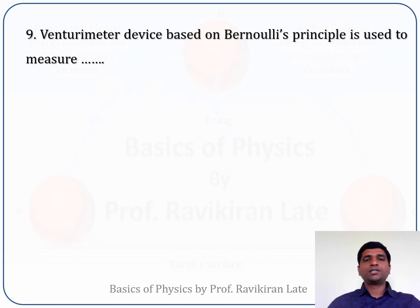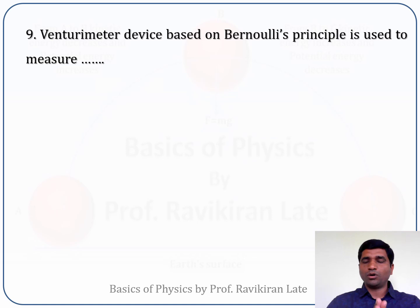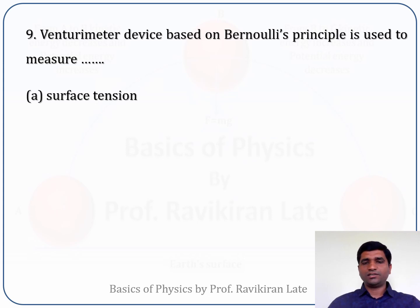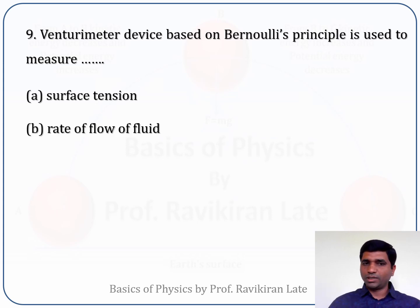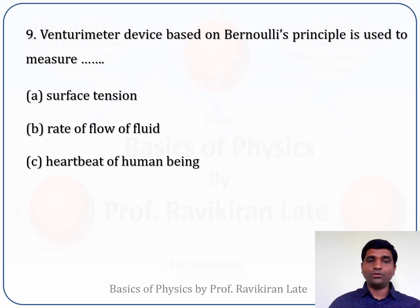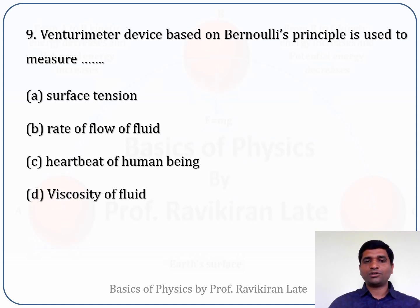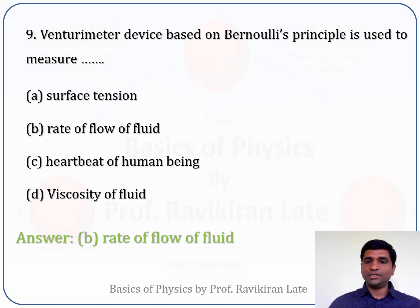The next question: a Venturimeter, a device based on Bernoulli's principle, is used to measure? Options are: surface tension, rate of flow of fluid, heartbeat of a human being, viscosity of fluid. Surface tension and heartbeat are clearly unrelated to Venturimeter. Viscosity is also not measured by it. The correct answer is option B — rate of flow of fluid.